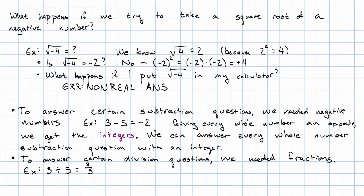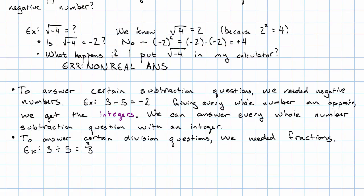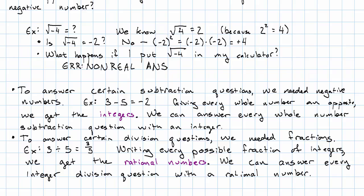To answer certain division questions, we needed the fractions. For example, 3 divided by 5 is 3 fifths. By writing every possible fraction of integers, we get the rational numbers. We can answer every integer division question with a rational number, provided we aren't dividing by 0. That's just a completely nonsensical question that we can ignore.